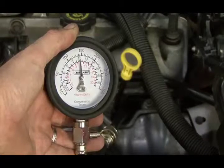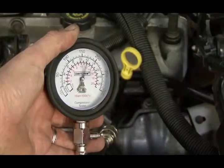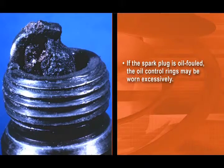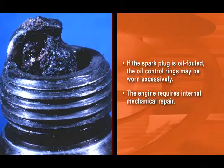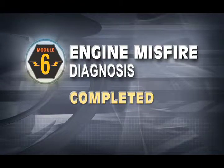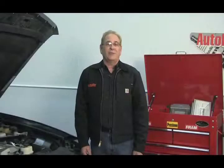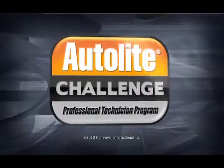Next, snap the throttle a couple times and allow the gauge to store the high pressure. If this reading is significantly higher than the cranking compression, you could have a restricted exhaust or an exhaust valve that isn't fully opening. If the spark plug is oil fouled, the oil control rings may be worn excessively and the engine will require internal mechanical repair. These are generalized instructions — always follow the troubleshooting diagram in the OE Service Manual for the vehicle you're working on. Congratulations! You've completed the sixth and final training module of the Autolite Challenge Professional Technician Program. Thank you for your time.